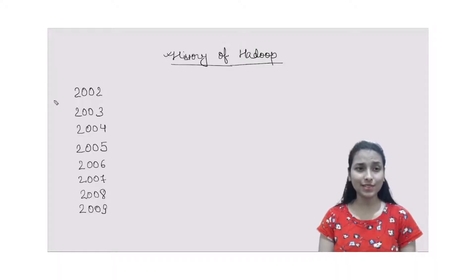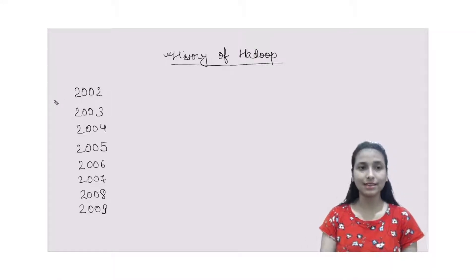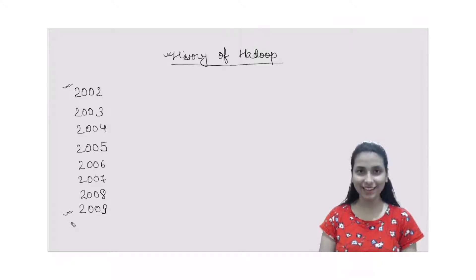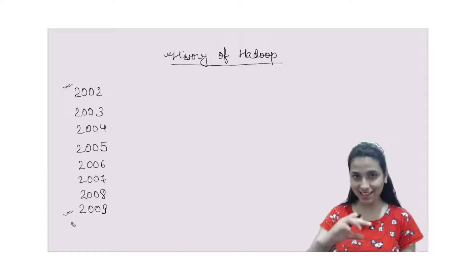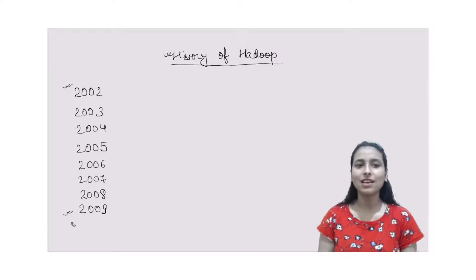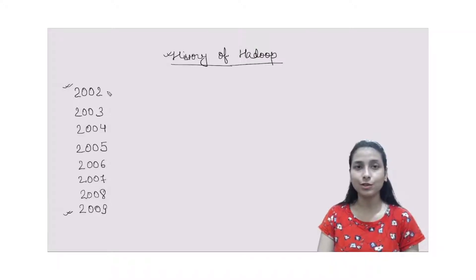As you can see on the screen, there are some years written, starting from 2002 and ending till 2009. This is the period in which Hadoop got evolved. Let us start from the first year, that is 2002.